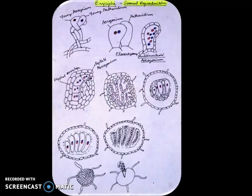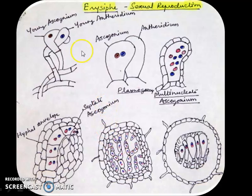Now sexual reproduction takes place. It forms an antheridium and an ascogonium on some nearby branches of hyphae. As you can see, there is visibly no difference between the ascogonium and the antheridium, but physiologically they behave differently.